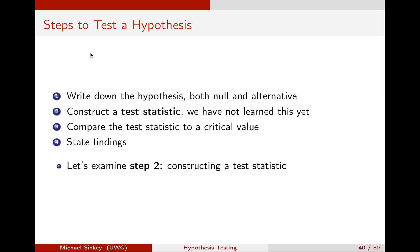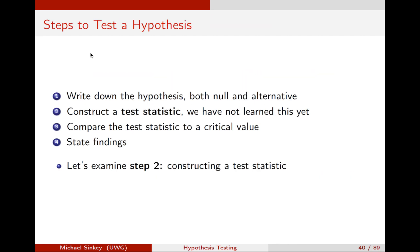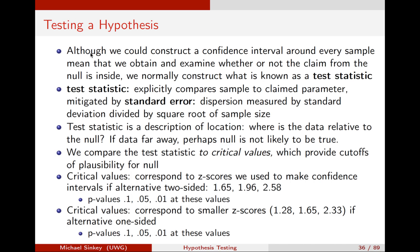We're going to examine a step called constructing a test statistic. To go back to the slides from the last lecture, the test statistic explicitly compares the sample to a claimed parameter. What the test statistic does is it describes the location of our data relative to the null hypothesis, and the thought process is that if our data are relatively far away from the null, the most reasonable thing to conclude is that there's support for the alternative.